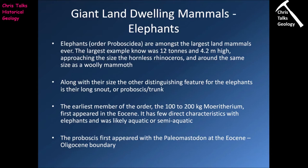The earliest member of the order is the 100 to 200 kilogram Moatherium, which first appears in the Eocene. It has few distinct characteristics which make it look like an elephant, and it was probably aquatic or semi-aquatic in its preferred habitat. The proboscis first appears with an organism called the Paleomastodon at the Eocene-Oligocene boundary.